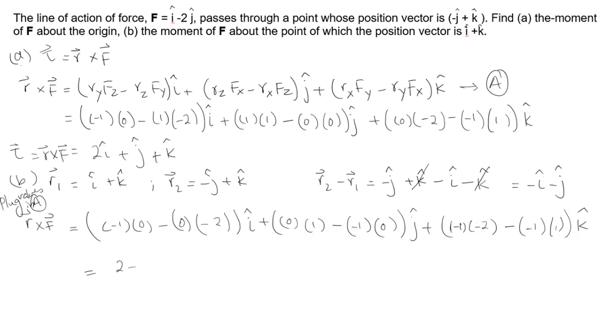and +1k. Now I can write this as 2j+k. So this is the answer for the second part of the question. Thank you so much.